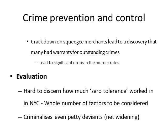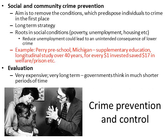In terms of evaluation, it's very difficult to know exactly how much zero tolerance worked in New York when it was attempted in the 1980s and early 90s, because at the same time a whole range of other things were happening — in particular, many more police officers were being recruited and a lot more money was being spent on policing. Furthermore, one criticism is that zero tolerance criminalises very petty deviants — so-called net widening. Should we really be focusing police on people urinating in the street when we need officers catching murderers and rapists?